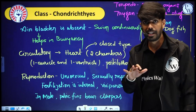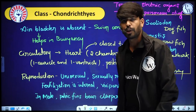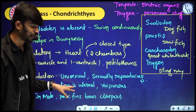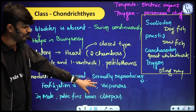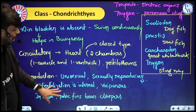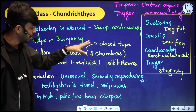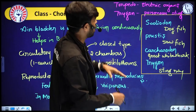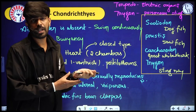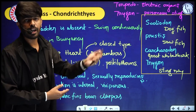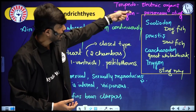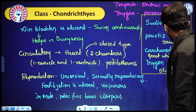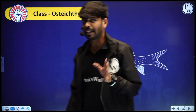Reproduction in Chondrichthyes: unisexual, sexually reproducing, fertilization is internal, development is direct, and they are viviparous. Male organisms have claspers in pelvic fins. Electric organs present in Torpedo; poisonous sting present in Trigon. The next class is Osteichthyes — bony fishes.